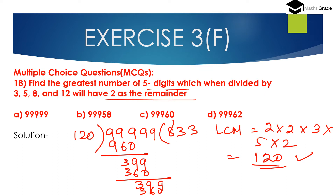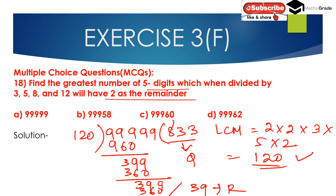The remainder is 39. So the greatest number of 5 digits which, when divided by 3, 5, 8, and 12, gives 2 as the remainder — we use this remainder of 39.